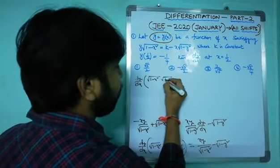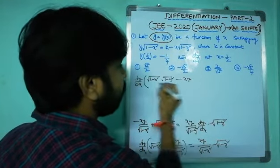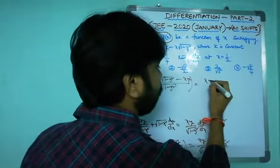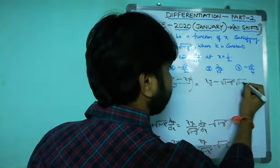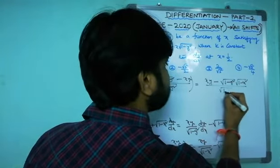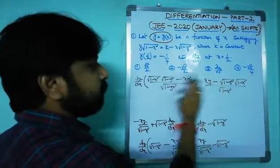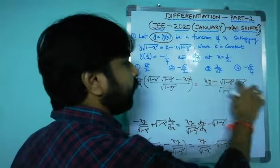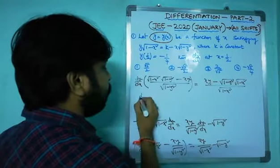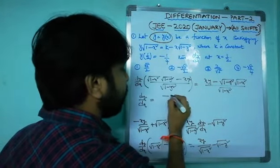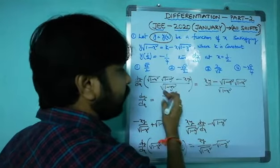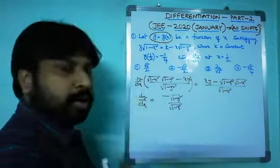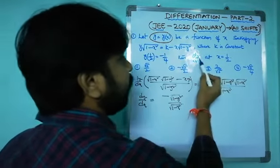Taking LCM on both sides: dy/dx · [√(1-x²)·√(1-y²) - xy] / √(1-y²) = [xy - √(1-y²)·√(1-x²)] / √(1-x²). The numerators are the same but differ by a negative sign. Taking minus common and cancelling gives dy/dx = -√(1-y²) / √(1-x²).